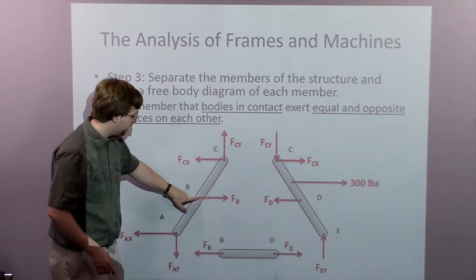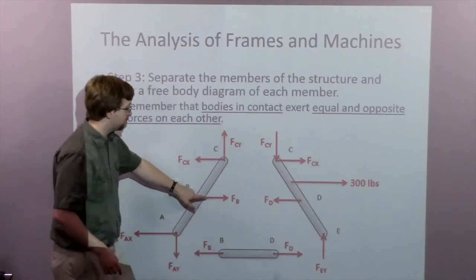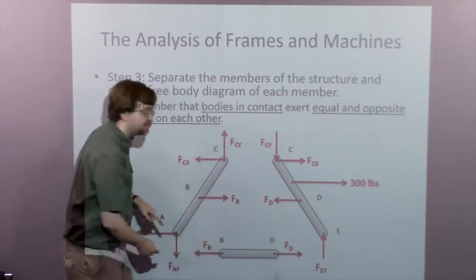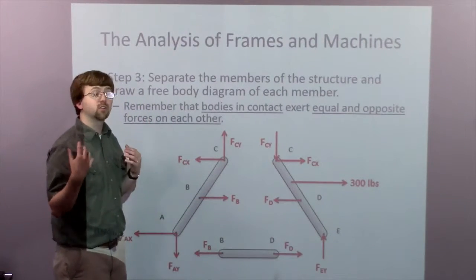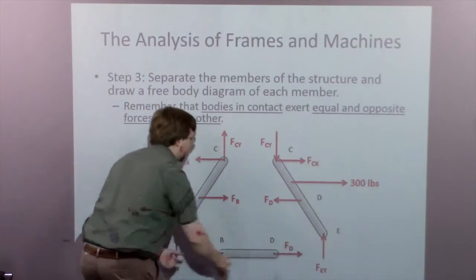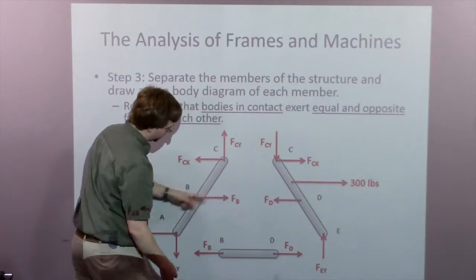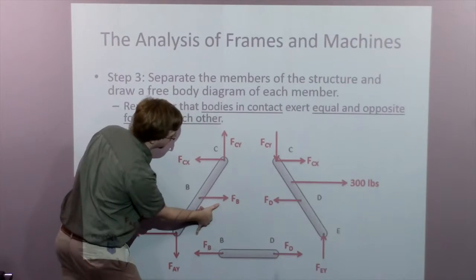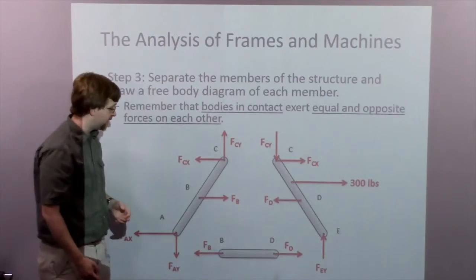And then here at B, I've got a two-force member connected. So even though B is connected by a pin joint, it's a two-force member, so it has to be pulling in the direction of that member. So you'll notice this piece is in tension, and this piece is going equal and opposite. And this is what I'm talking about with the Newton's Third Law pairs.